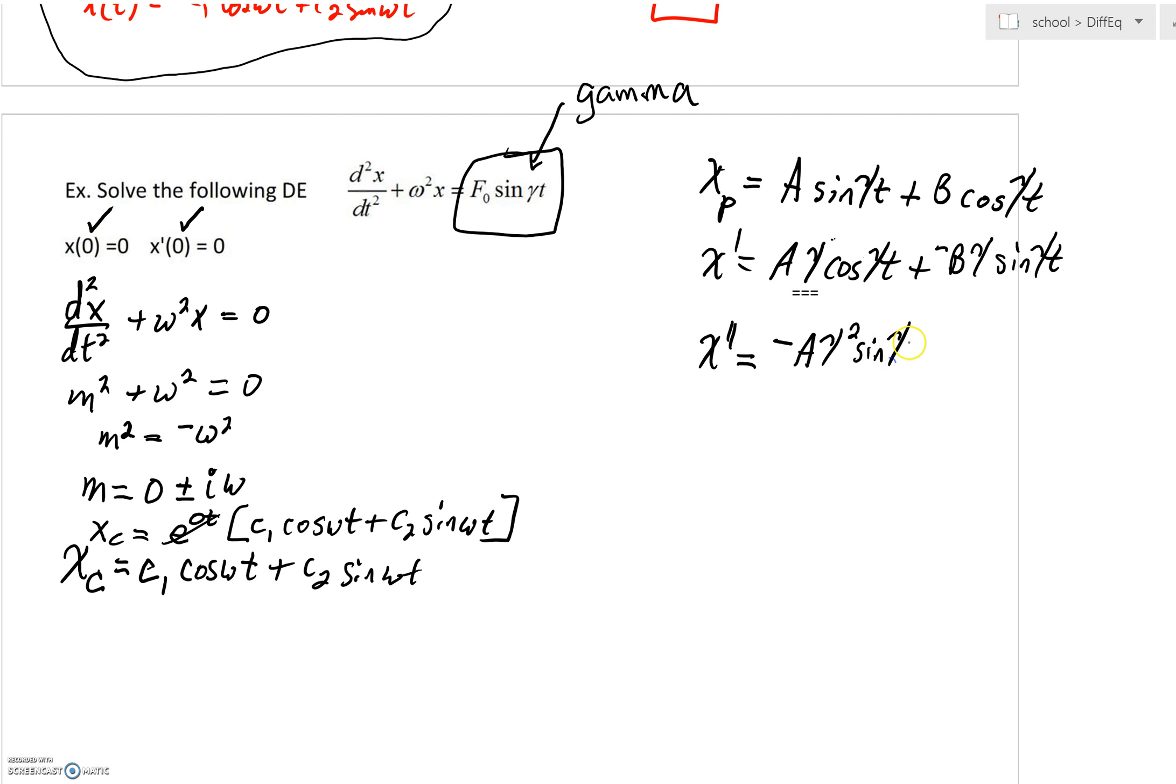You can see how that's coming. Same thing's going to happen over here. The derivative of sine is just cosine. But again, another factor of gamma is going to be coming out from the chain rule.